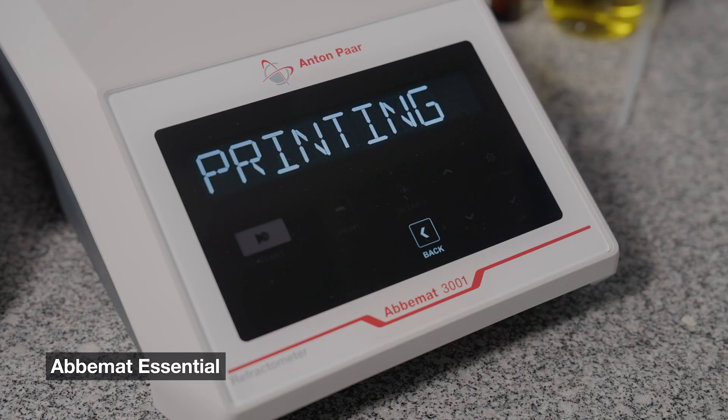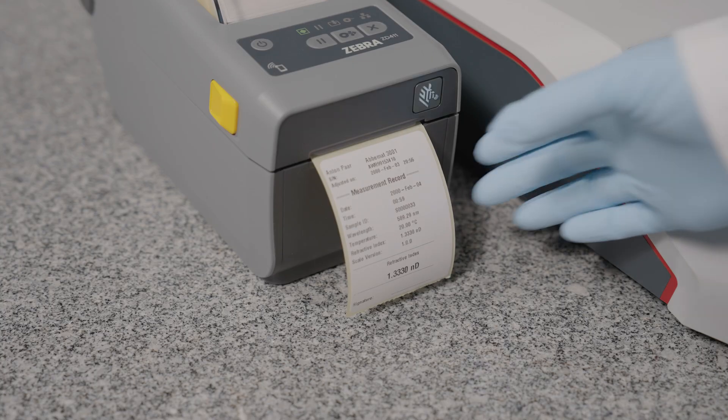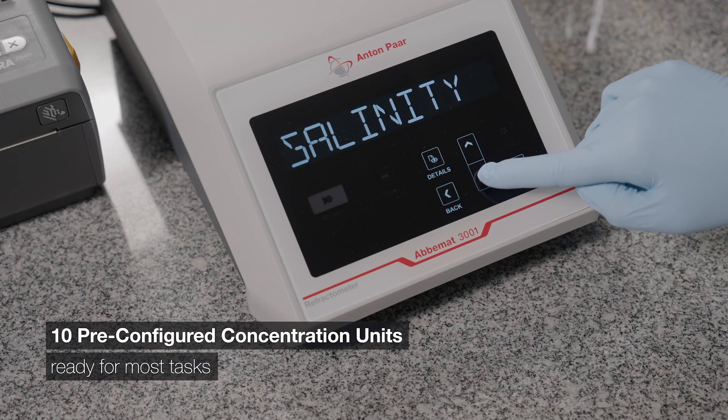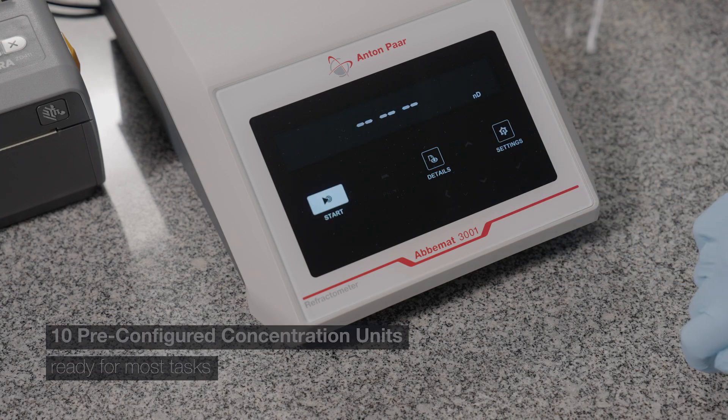Abiumat Essential can be used right out of the box. It sends your results straight to a label printer. With 10 pre-configured concentration units, including bricks, it is ready for most standard tasks.